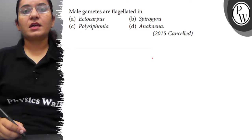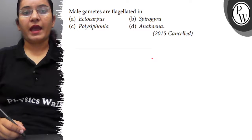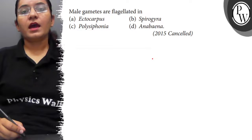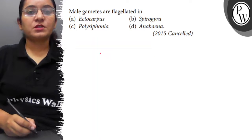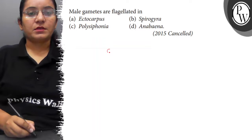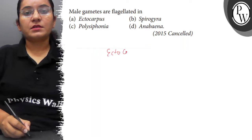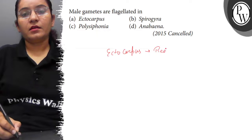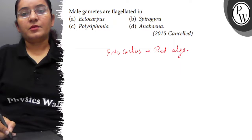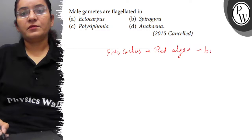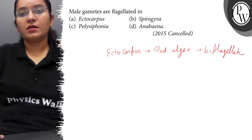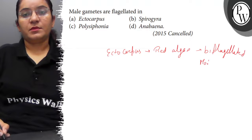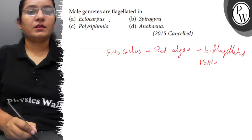The question is: male gametes are flagellated in (a) Ectocarpus, (b) Spirogyra, (c) Polysiphonia, and (d) Anabaena. Looking at option A, Ectocarpus is a red algae that produces biflagellated, meaning two-flagella, motile gametes. So this option can be correct.